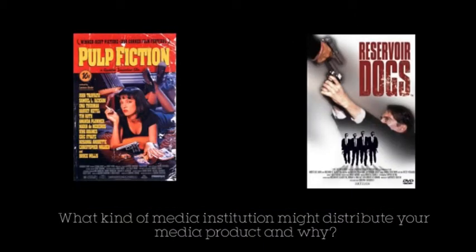We researched also into the budget of crime thriller films and the profit they had made from them. We looked at Reservoir Dogs and Pulp Fiction. Reservoir Dogs had a low budget of £1.2 million and made a worldwide gross of £6.5 million just in the UK. Pulp Fiction had a budget of £8.5 million, which is a larger budget than Reservoir Dogs, but made a gross of £213 million worldwide. By researching into this, we found that our film would be a smaller independent film.